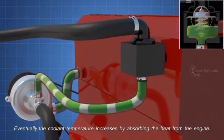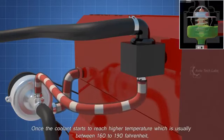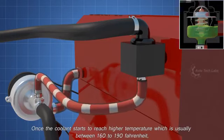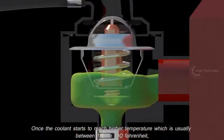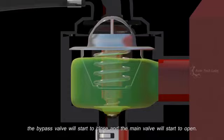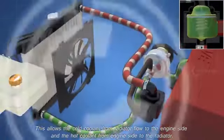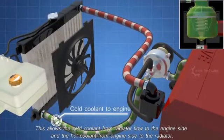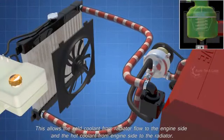Eventually, the coolant temperature increases by absorbing the heat from the engine. Once the coolant starts to reach higher temperature, which is usually between 160 to 190 Fahrenheit, the bypass valve will start to close and the main valve will start to open. This allows the cold coolant from radiator flow to the engine side, and the hot coolant from engine side flow to the radiator.